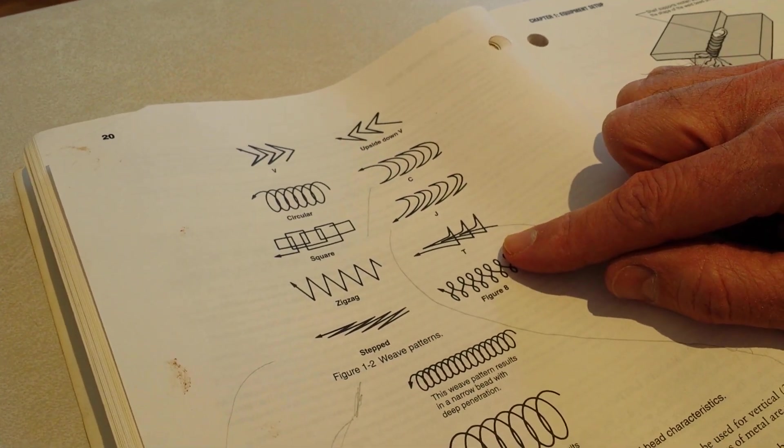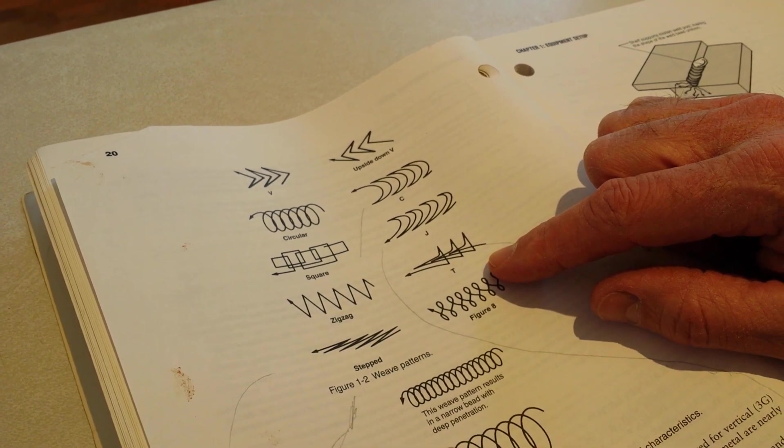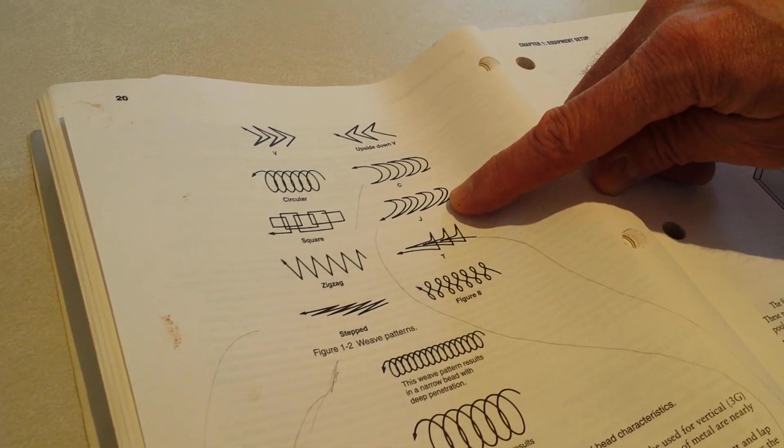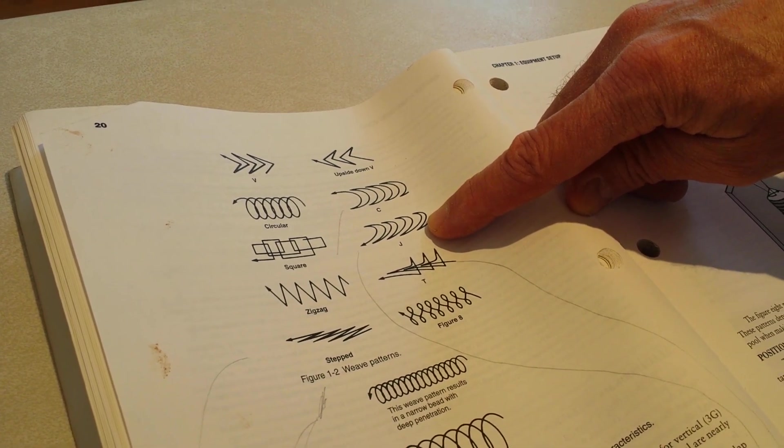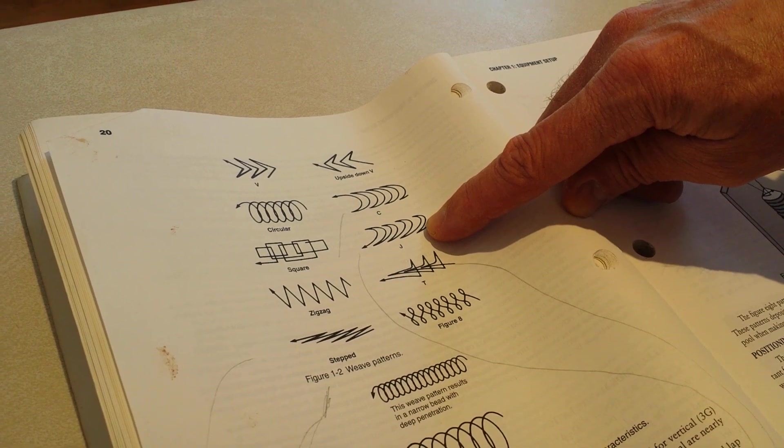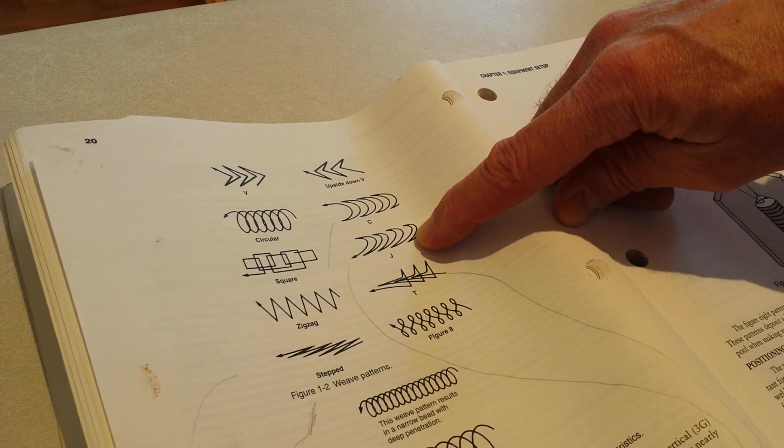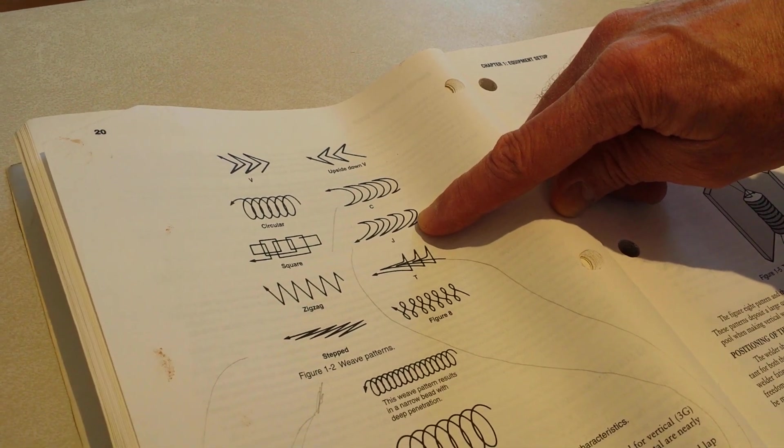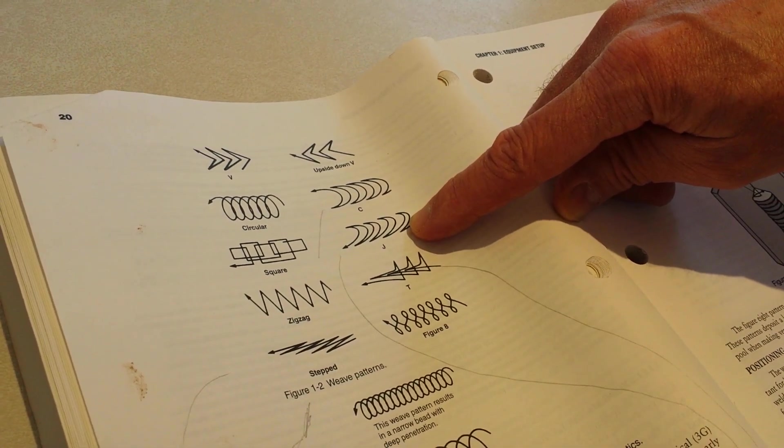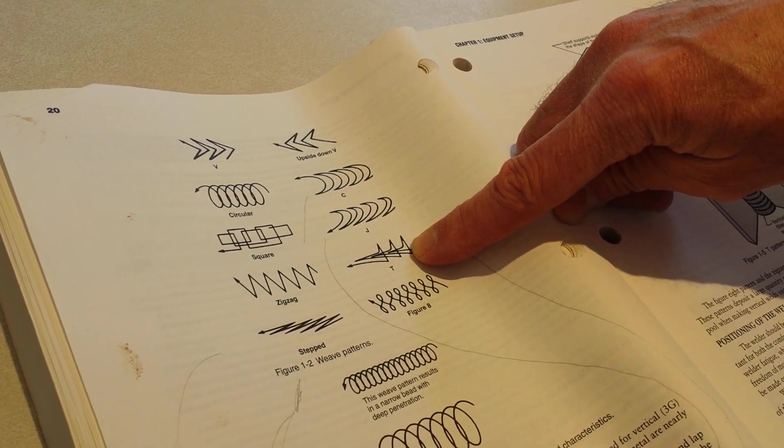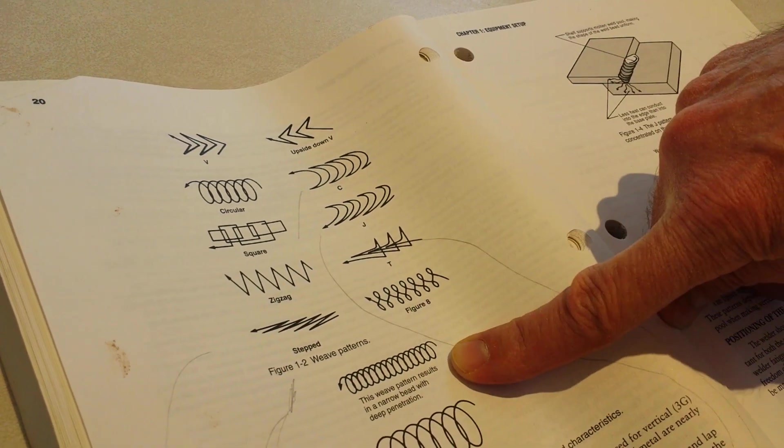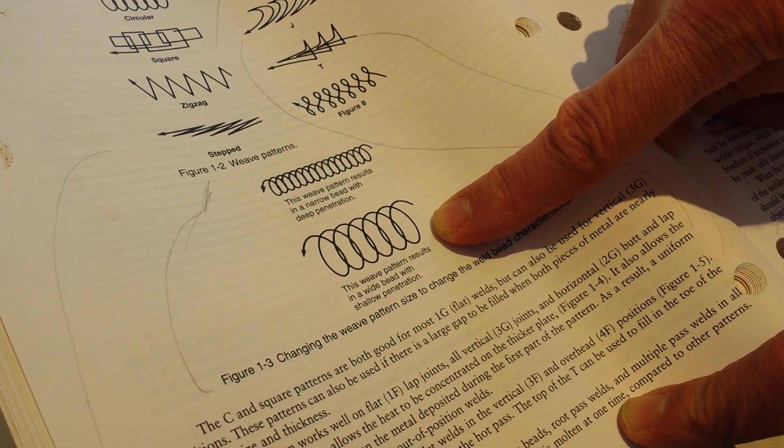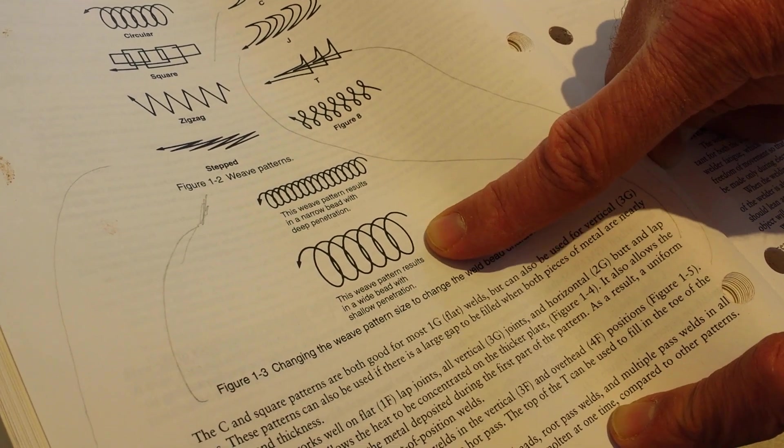So they say for most flat welds like a 1G weld they like this pattern. Can also be used for vertical, and then this one they like on lap joints and vertical. So 1F lap joints and 3G vertical and 2G horizontal butt and lap welds. And then they say this pattern allows the heat to be concentrated on the thicker plate. Anyway, this kind of stuff. And then this one they like for vertical and overhead.